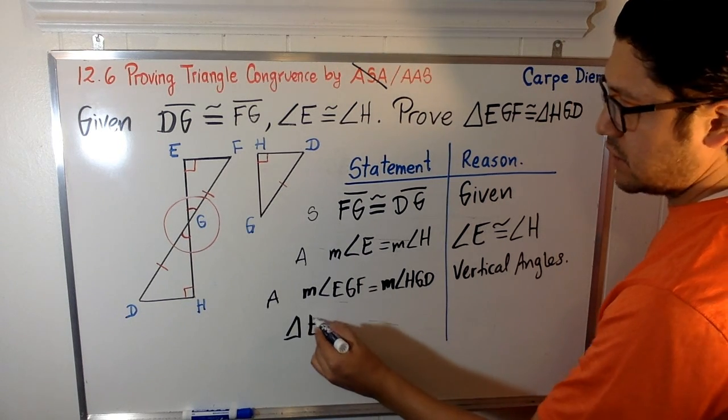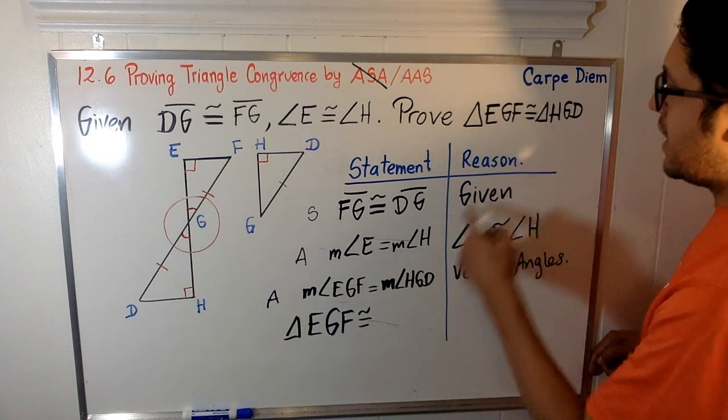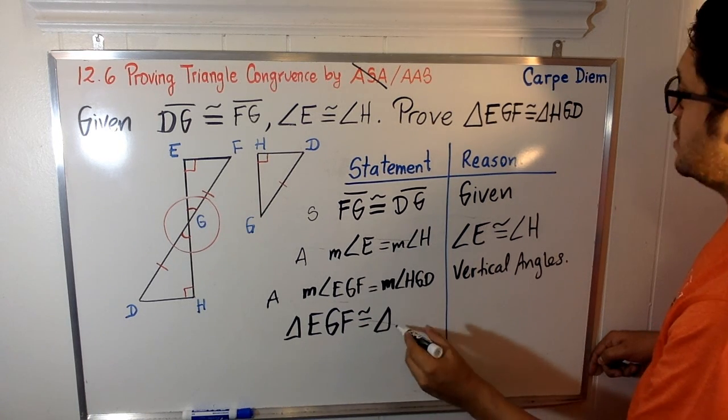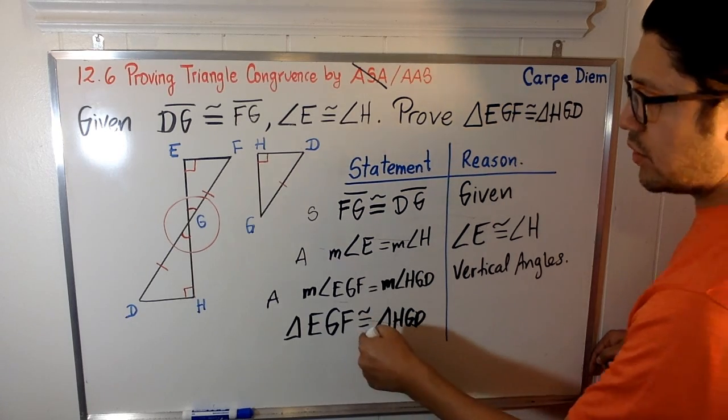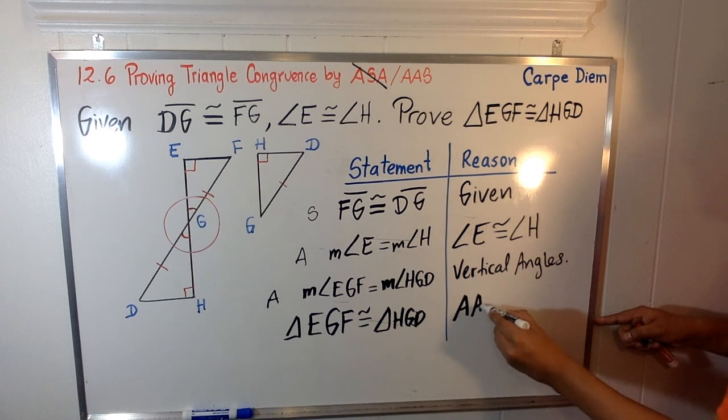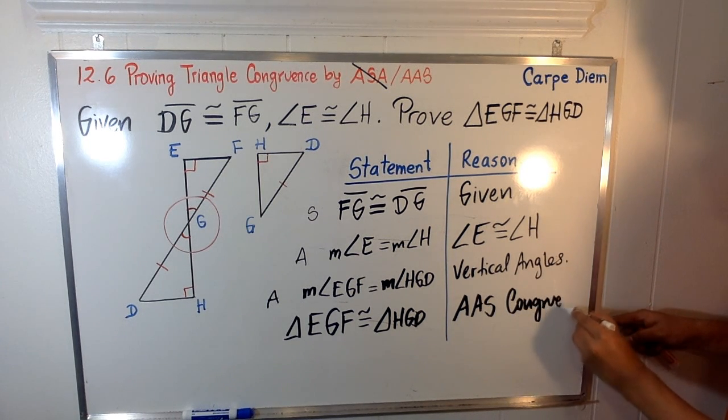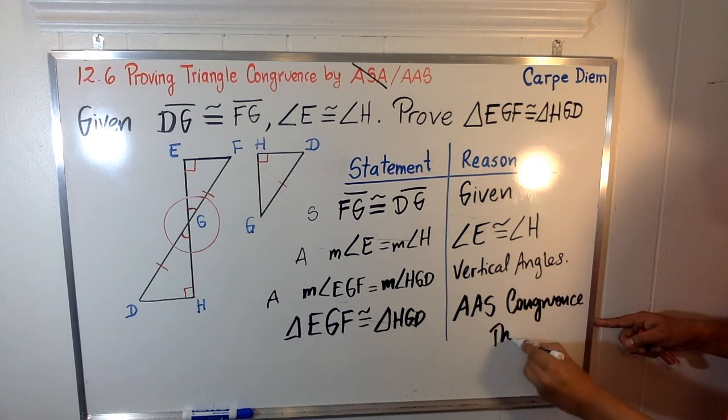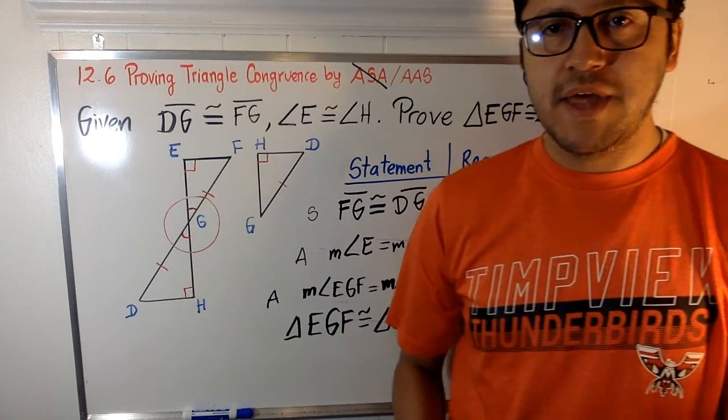The triangle, triangle EGF and triangle HGD are congruent. And I can state that because I am using the angle angle side congruence theorem. And I'm done. Thank you very much, guys.